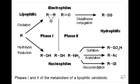What is the mnemonic to help you remember the conjugation that occurs in Phase 2 of drug metabolism? The mnemonic to help you remember this is to think that geriatric patients have GAS — that stands for glucuronidation, acetylation, and sulfation.